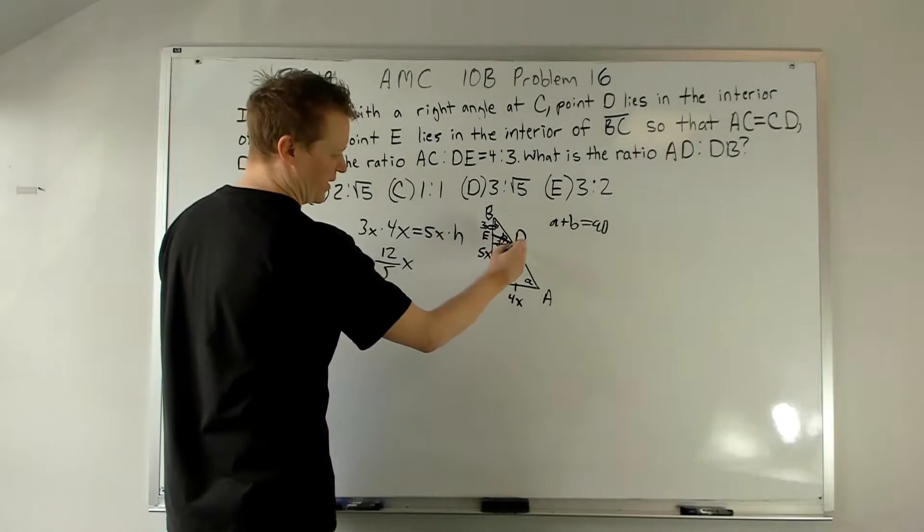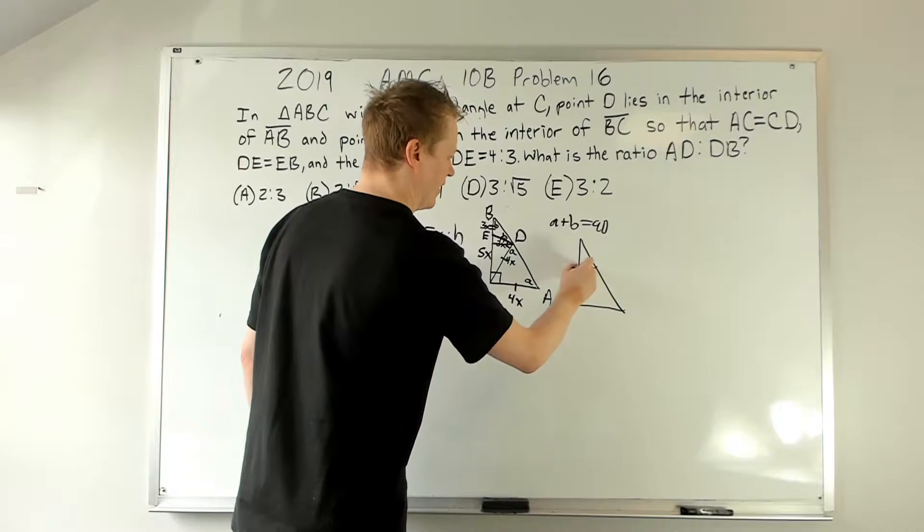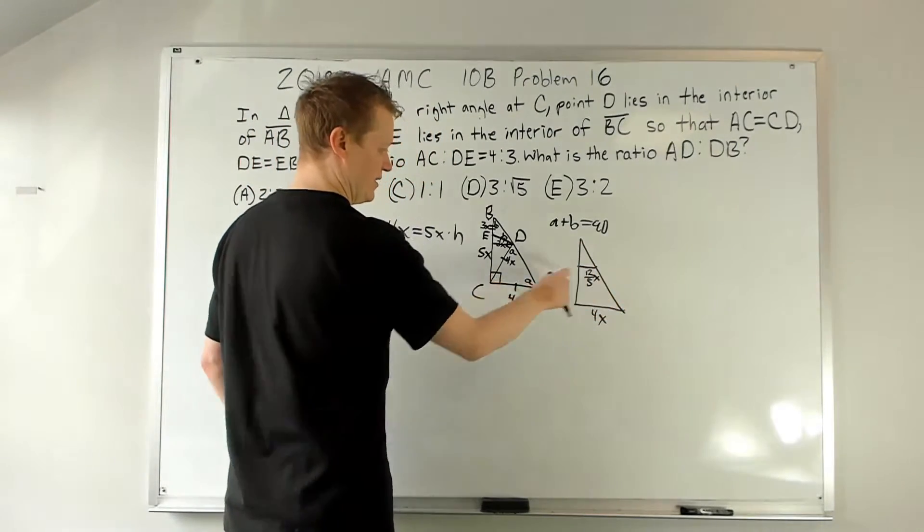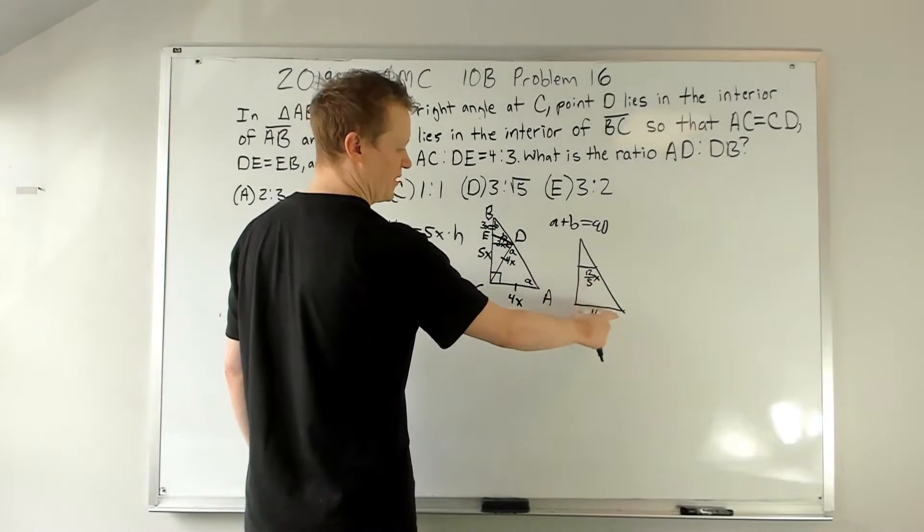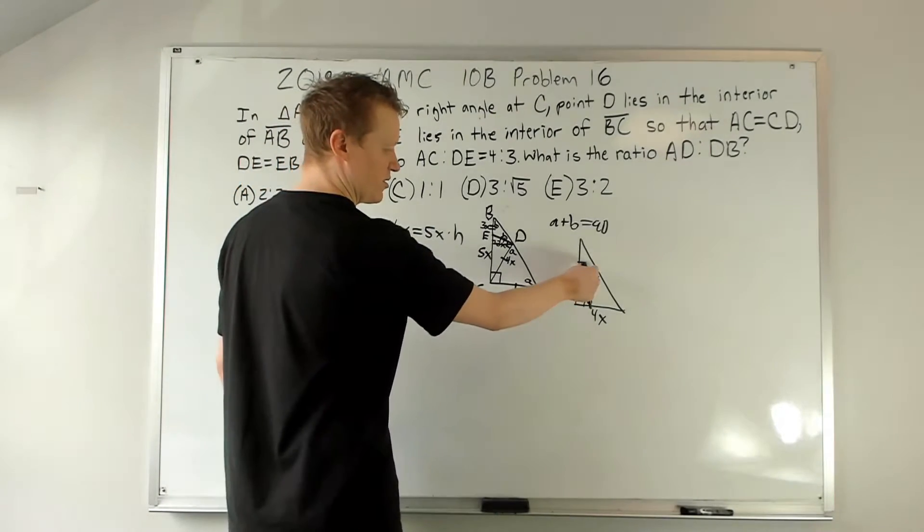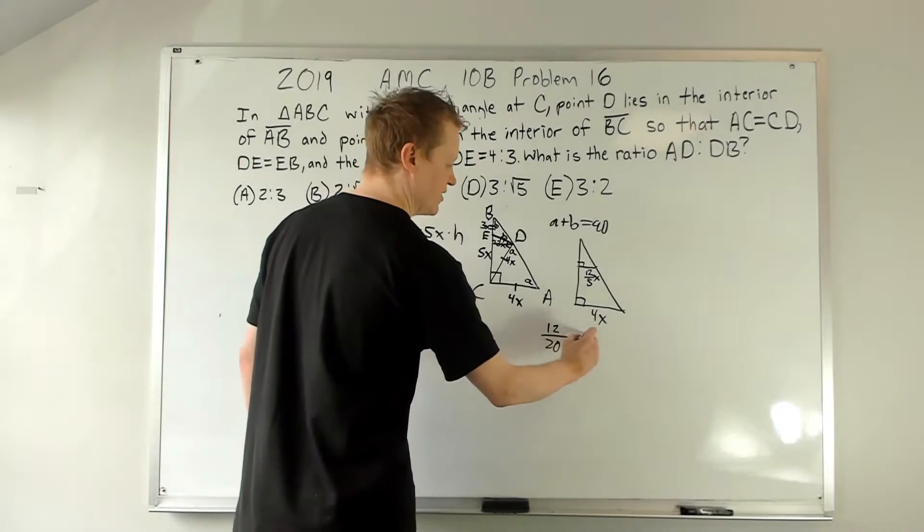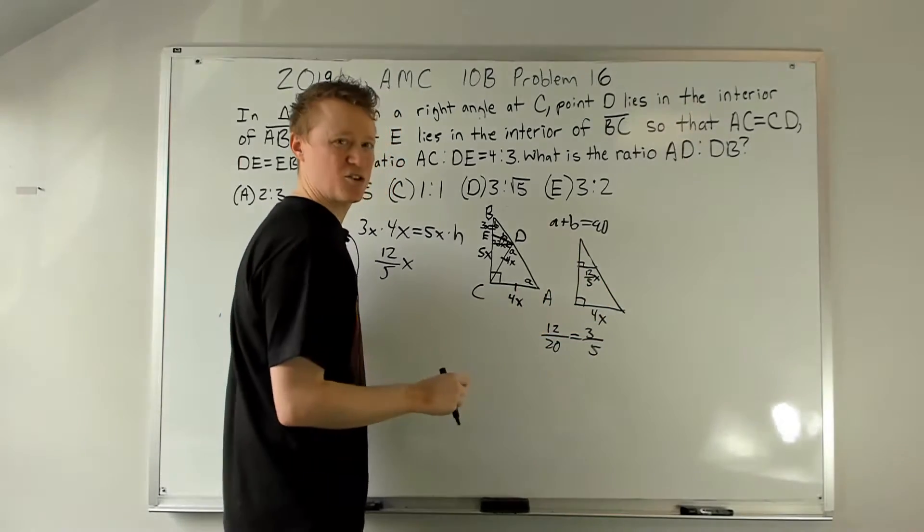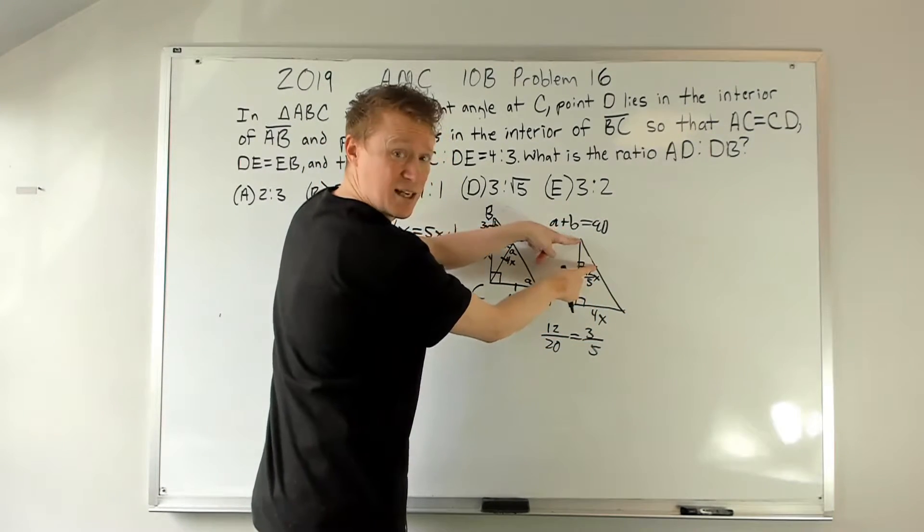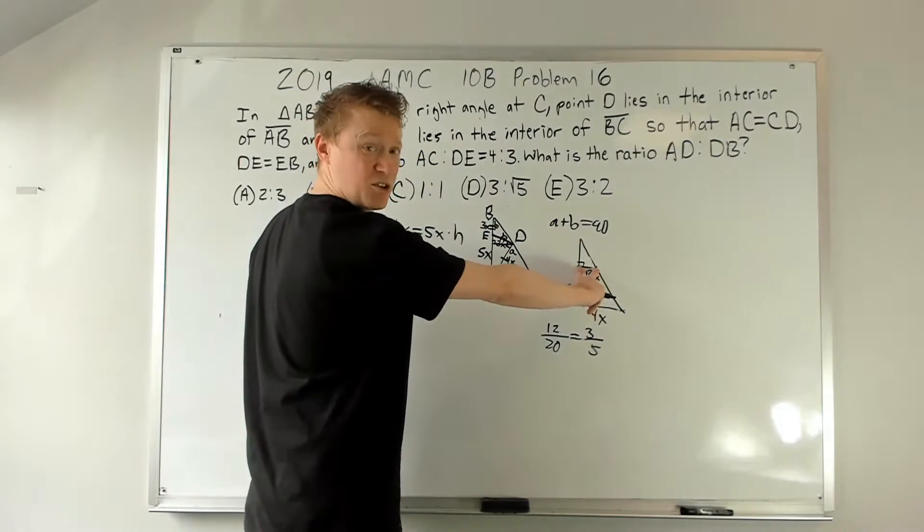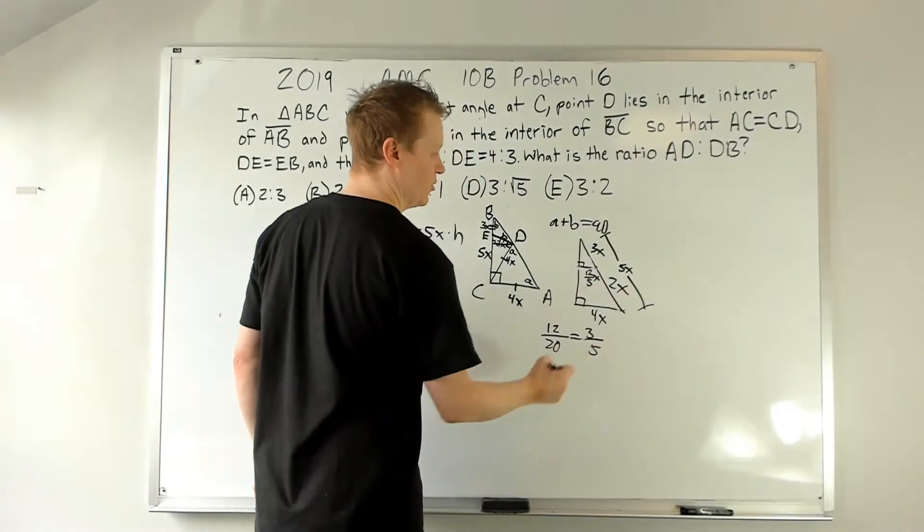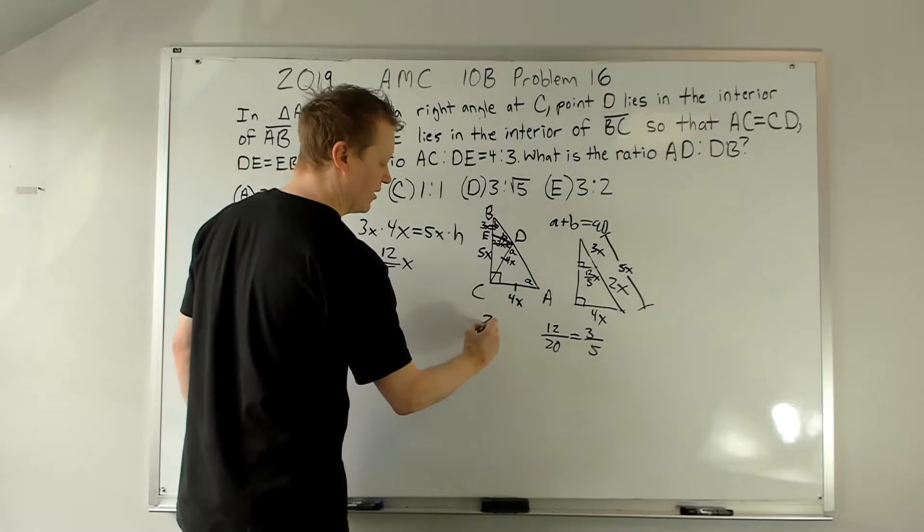Okay, so then this length right here - let's go ahead and draw this separately real quick so we can look at it. We've got this is 12 fifths x and this is 4x. And we're looking for the ratio of AD to BD. Okay, so similar triangles, right? If we made this the altitude, then we know it's 90 degrees to go with that 90 degrees. We can say the ratio of this to this, 12 over 20 which is 3 fifths, is the ratio of the small triangle to the big triangle. Be careful - it's 3 to 5. Because the small triangle's hypotenuse to the big triangle's hypotenuse has this ratio. So this is 3x and the whole thing is 5x, which means this is 2x. And since we want the ratio of AD to DB, we get 2 to 3.